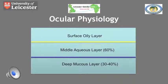The tear film has several roles within the orbit. It maintains the smooth optical properties of the corneal surface. It also provides oxygen to the avascular cornea and lubricates the interface between the lids and the cornea, which allows the removal of foreign bodies and debris. The tears also provide antibacterial properties to the cornea.